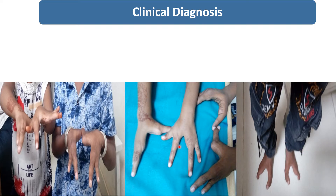In these images you can see both the siblings are having the deep median cleft of the hands, and similarly of both feet also. This deep median cleft is present in both siblings' hands and feet, and they are also having aplasia or hypoplasia of the phalanges, metacarpals, and metatarsals. So on the basis of these characteristic clinical findings, what will be our clinical diagnosis?